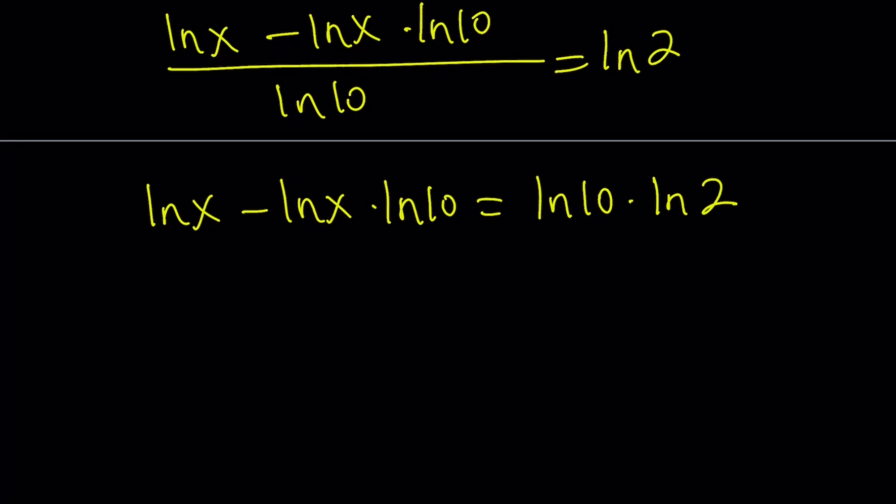ln x minus ln x times ln 10 equals ln 10 times ln 2. ln 10 does not equal 1. Be careful. Log 10 is equal to 1 because it's base 10, but this is a different base. Now, let's go ahead and take out ln x. We can factor. And we get 1 minus ln 10.